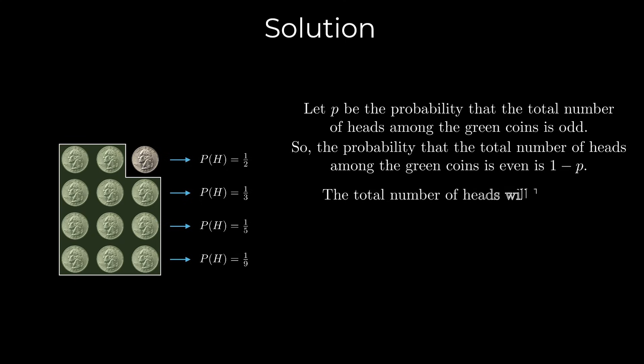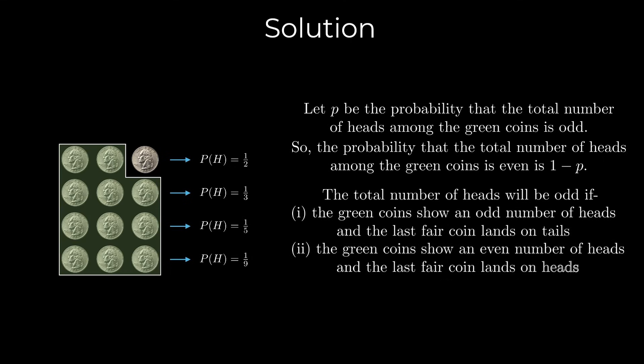The total number of heads among all the coins will be odd if the green coins show an odd number of heads and the last fair coin lands on tail, or the green coins show an even number of heads and the last fair coin lands on heads. The probability of the first case is P into 1 by 2. The probability of the second case is 1 minus P into 1 by 2.